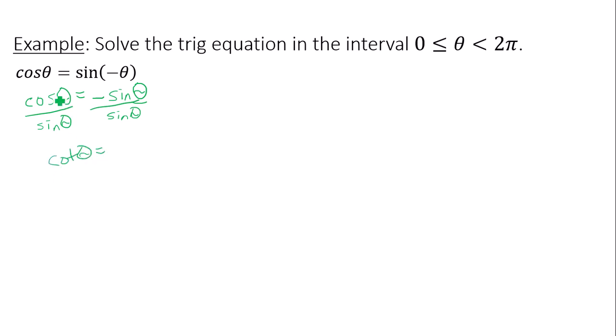So I have cotangent theta equals negative 1 over 1. Keep in mind that since cotangent is negative, theta is in what quadrant? Quadrants 2 and 4. Because cotangent and tangent are positive in 1 and 3, so cotangent is negative in quadrants 2 and 4.